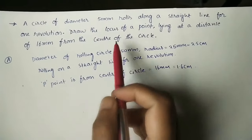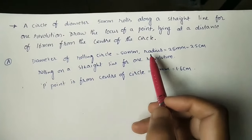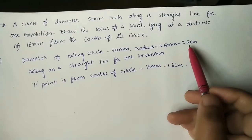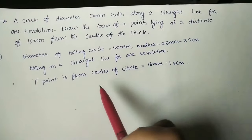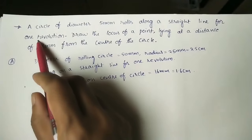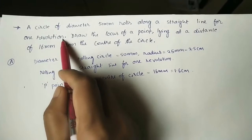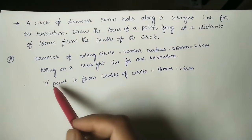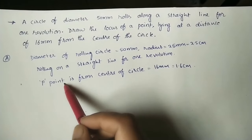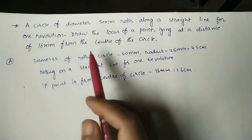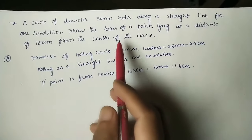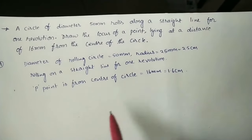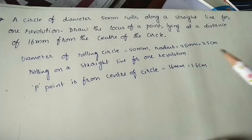The diameter of the circle is 50 mm, so the radius is 25 mm, which is 2.5 centimeters. The circle rolls for one complete revolution. Point P is inside the circle at 16 mm from the center, which is 1.6 centimeters.